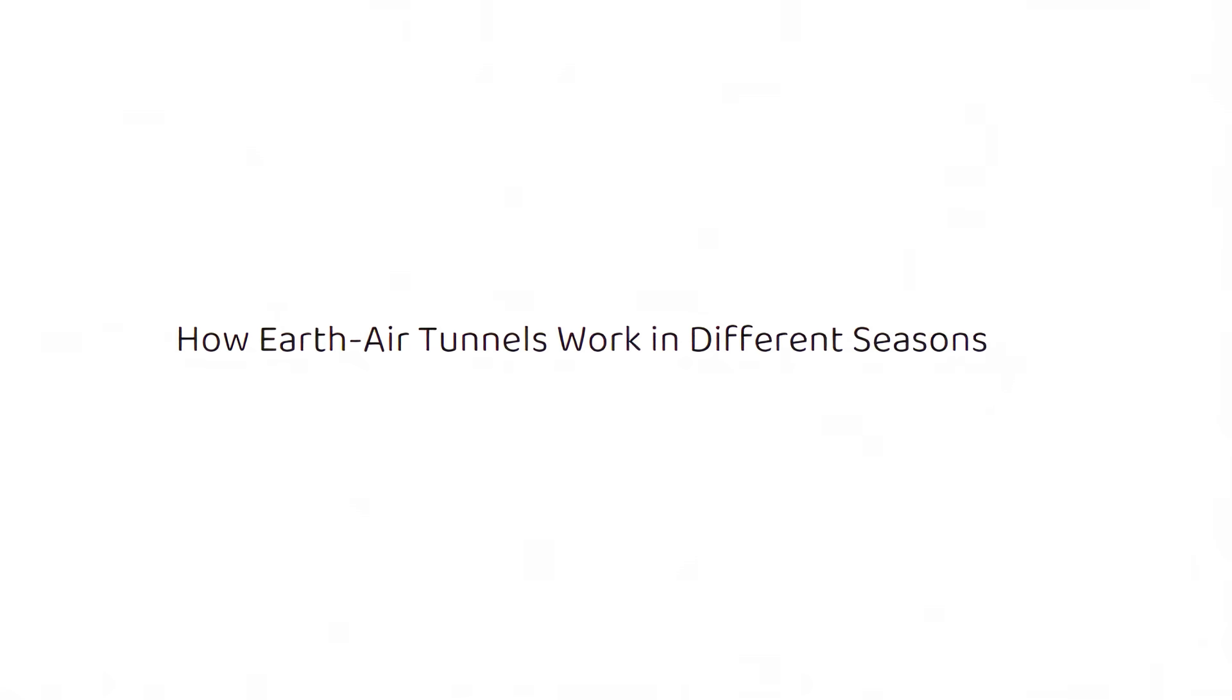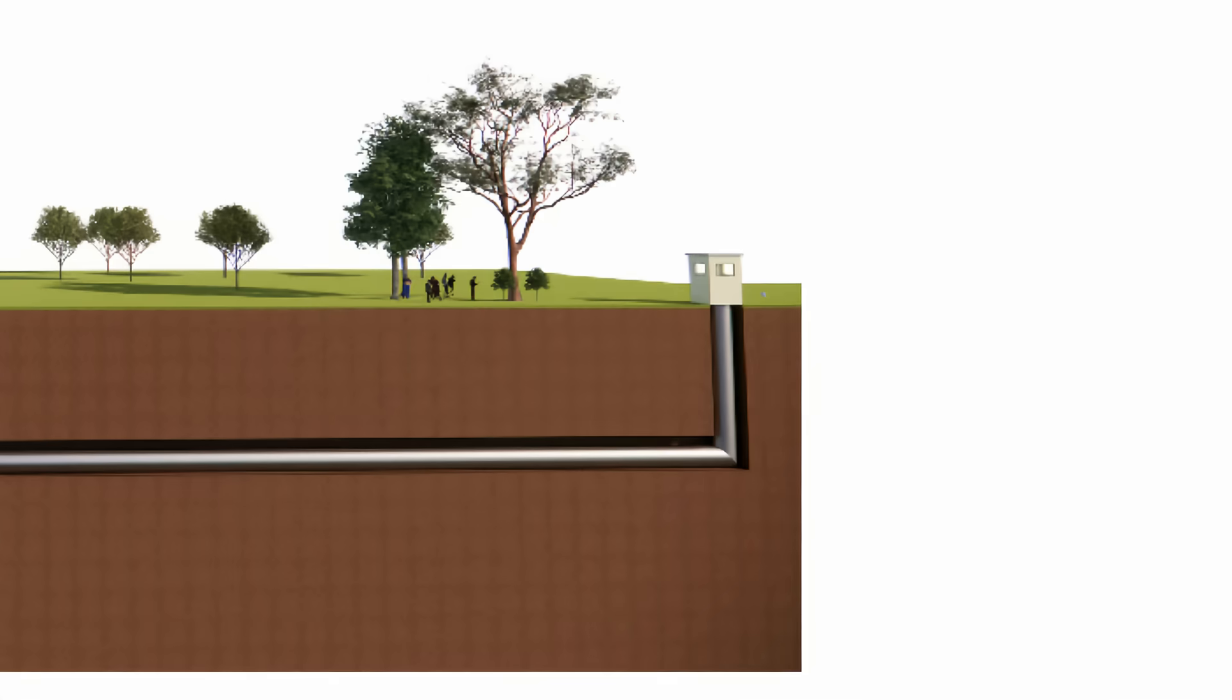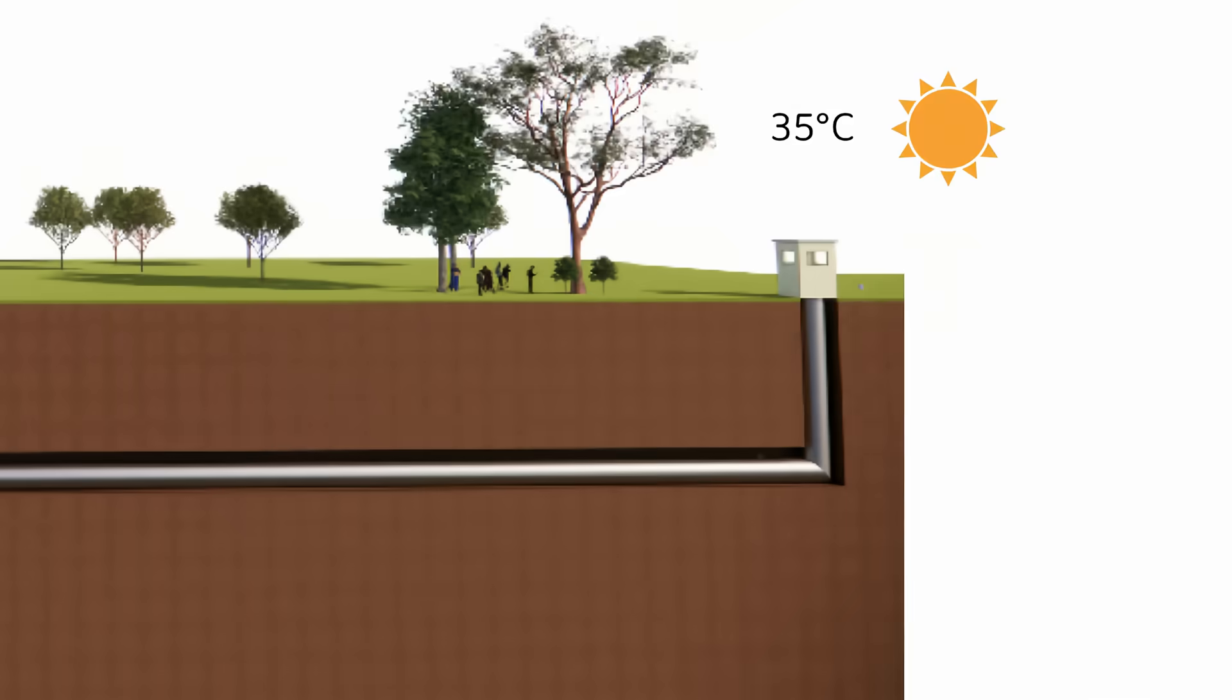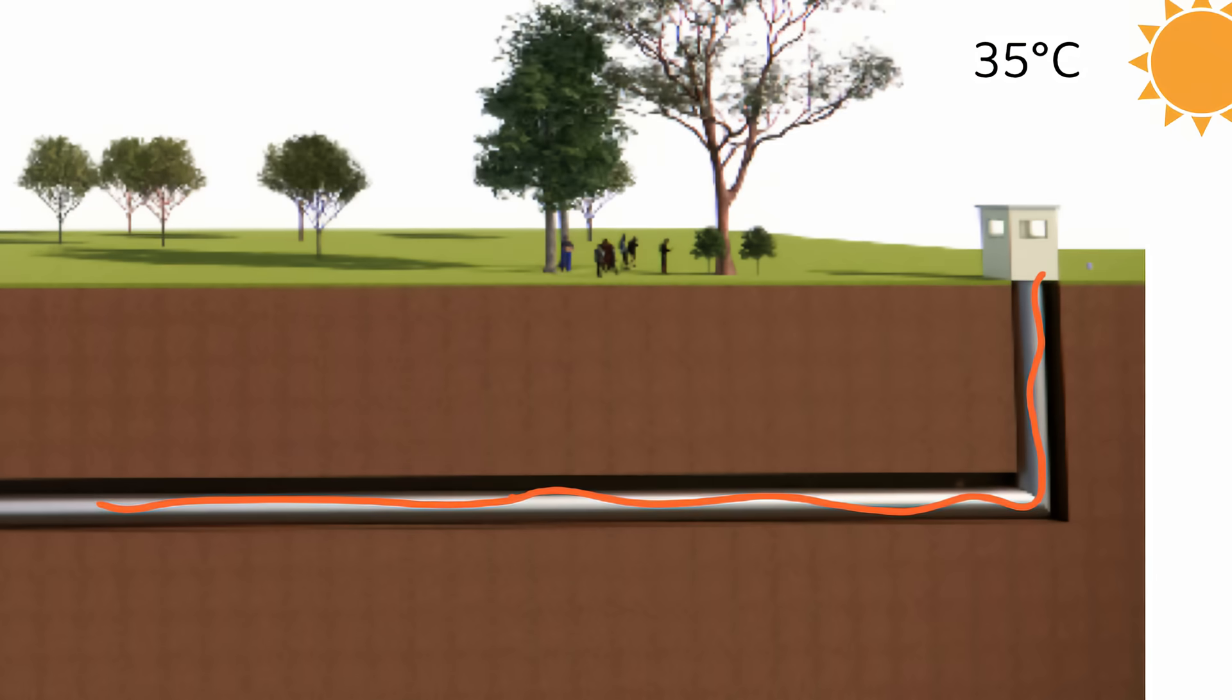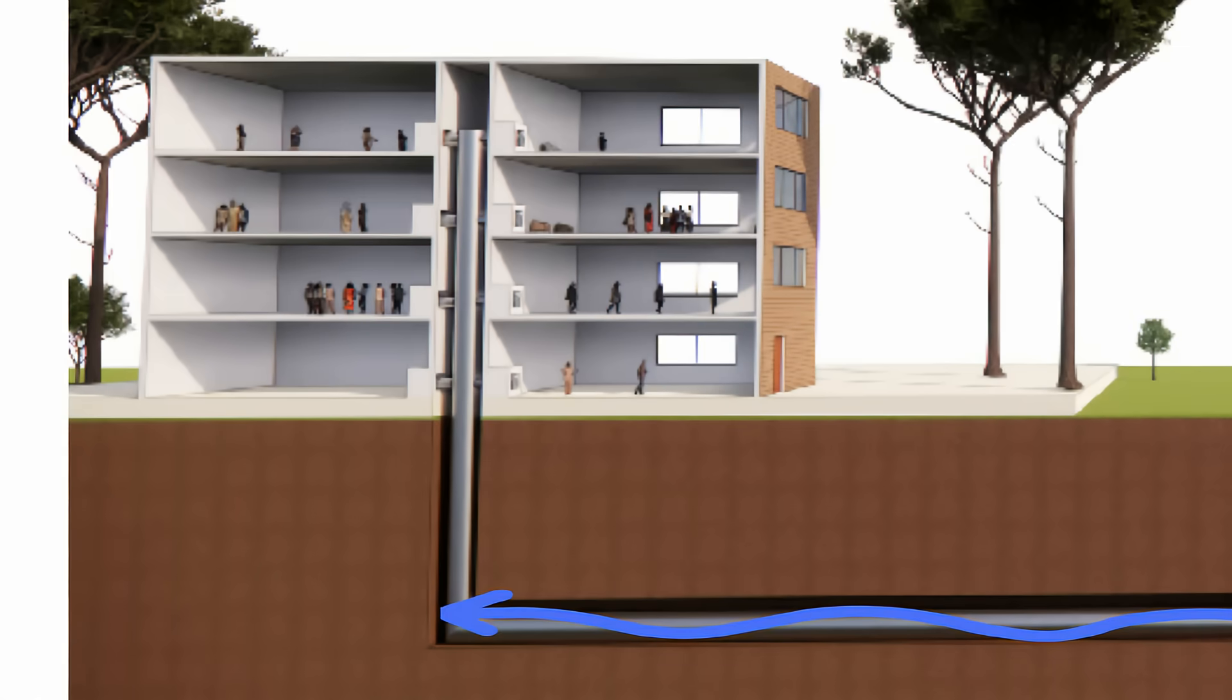How earth-air tunnels work in different seasons. Let's say it's the middle of summer and the outside air is 35 degrees Celsius. Instead of bringing this hot air directly into your home, it first travels through the underground pipes. Since the soil at this depth is 15 degrees Celsius, the hot air transfers its heat to the cooler soil as it moves through the tunnel. By the time the air reaches your home, it has cooled down to a comfortable 18 to 22 degrees Celsius, reducing the need for air conditioning.